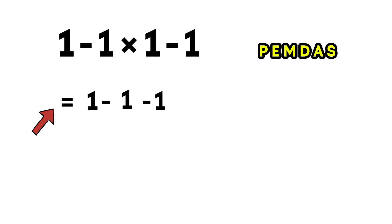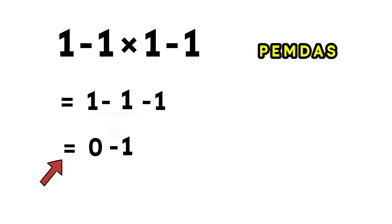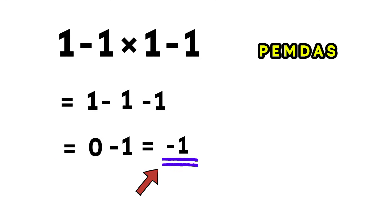Next, we handle the subtractions from left to right. First, 1 minus 1 gives 0. Now we have 0 minus 1, and 0 minus 1 equals negative 1. So the final answer is negative 1, and that is our solution.